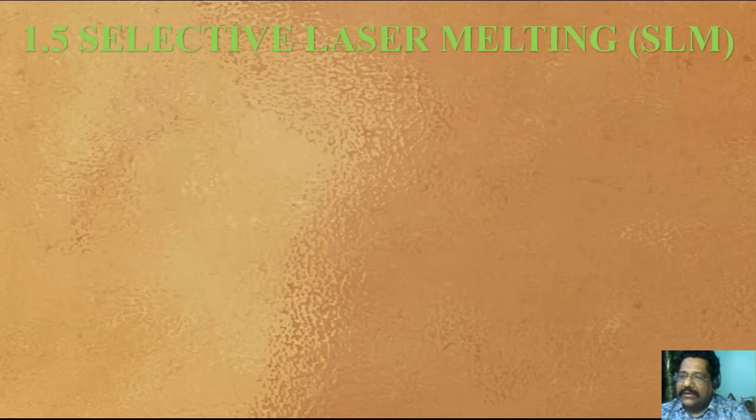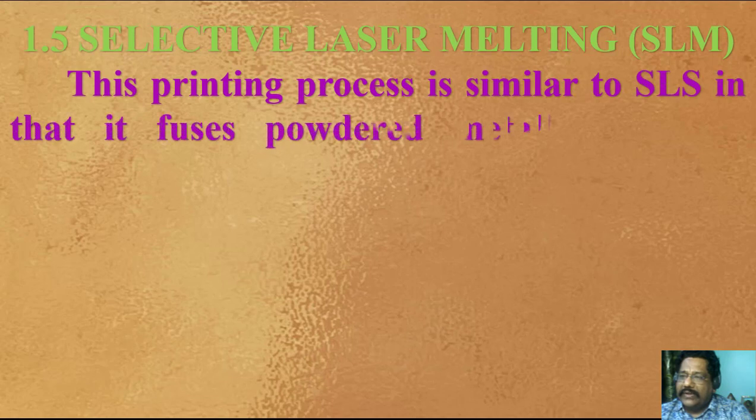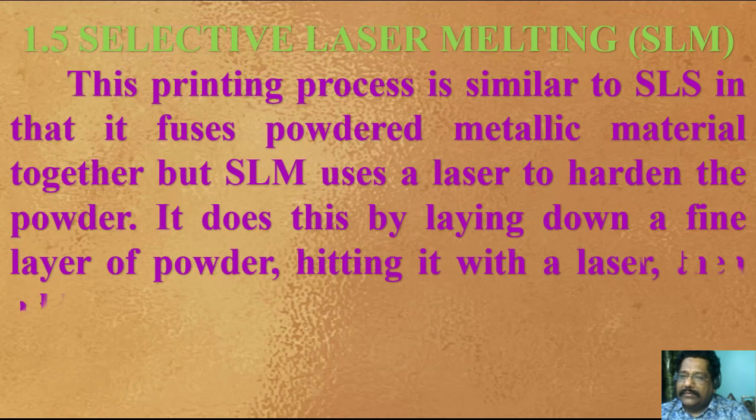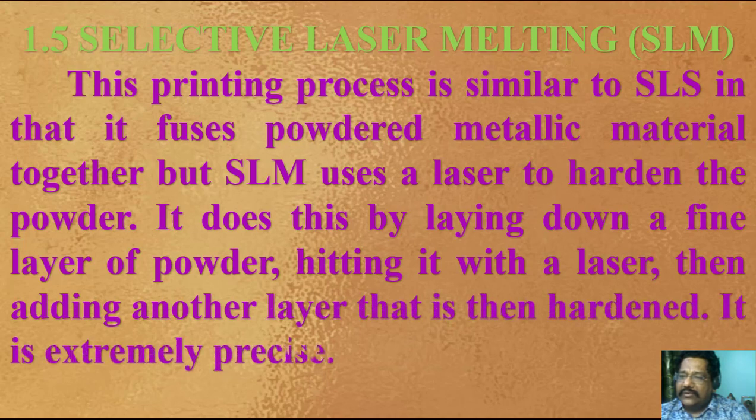Selective Laser Melting SLM. This printing process is similar to SLS in that it fuses powdered metallic material together, but SLM uses a laser to harden the powder. It does this by laying down a fine layer of powder, heating it with a laser, then adding another layer that is then hardened. It is extremely precise.